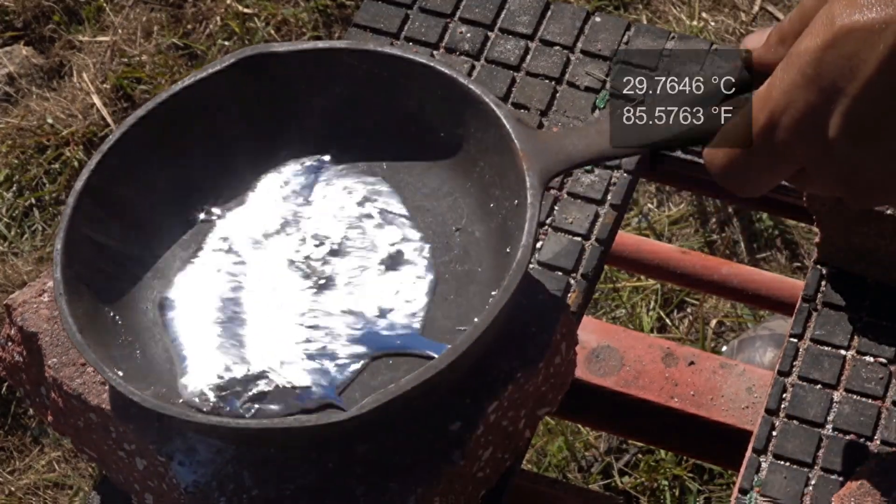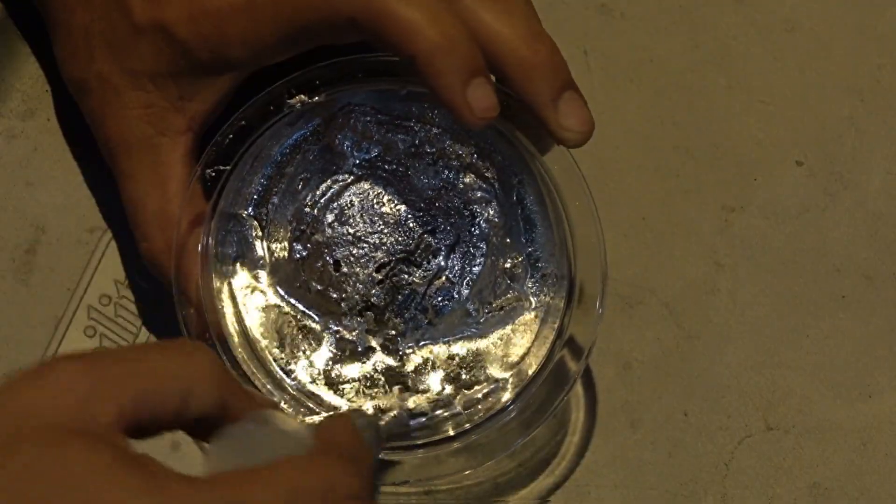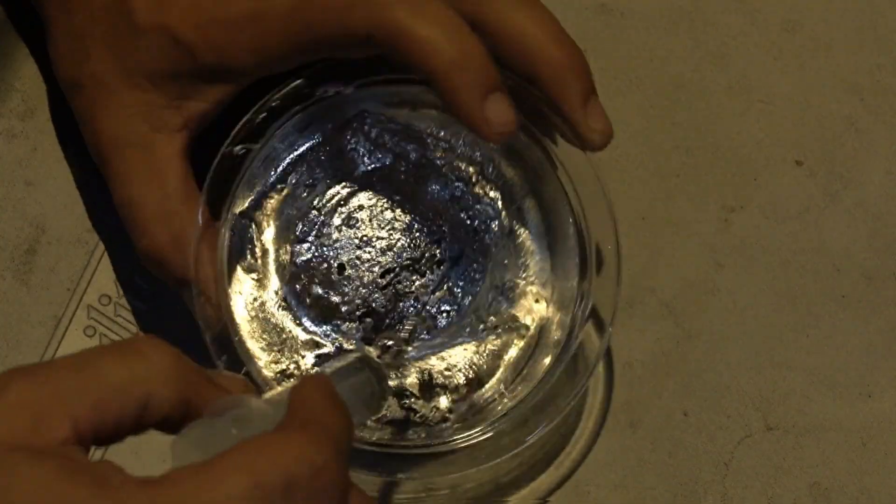Gallium has a low melting point just below 86 degrees Fahrenheit and in its molten state gallium becomes almost 99% reflective.